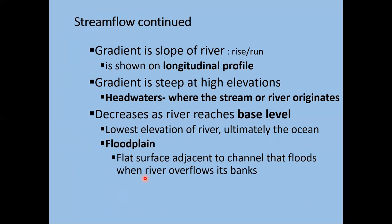The gradient is the slope of a river — rise over run. A river's gradient is shown on a longitudinal profile, which is a graph showing how the river changes elevation on its route to the ocean. The gradient is steepest at higher elevations near the headwaters and decreases as the river reaches base level — the ocean, which is the ultimate base level. Rivers can't erode below the ocean. The floodplain is the flat surface adjacent to the channel that floods when the river overflows its banks.